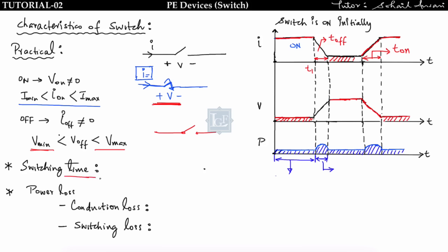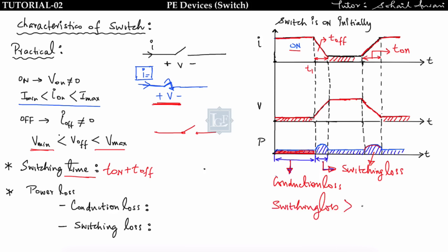These are the characteristics of a practical switch. Switching time equals t_on plus t_off. During the on state, current flows with a small finite voltage, producing conduction loss. During the transition (turn-on and turn-off), since finite current and voltage overlap, switching loss occurs — one component during turn-off and one during turn-on. Normally switching loss is greater than conduction loss.